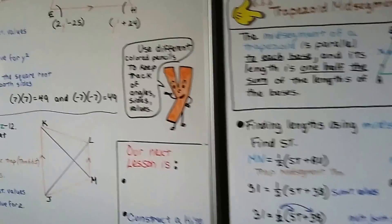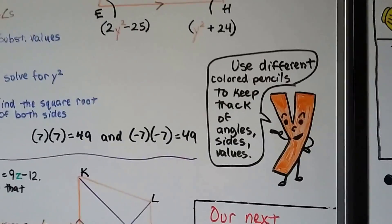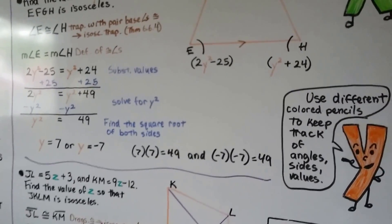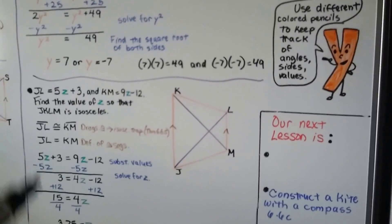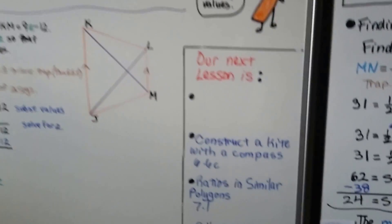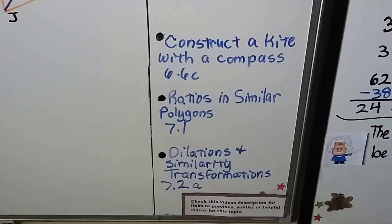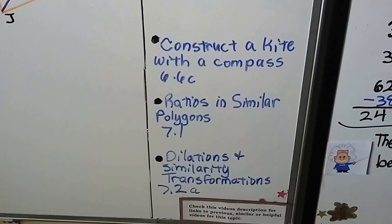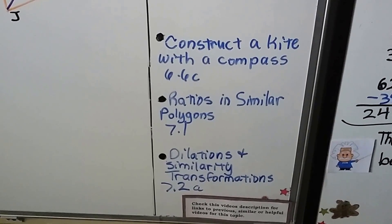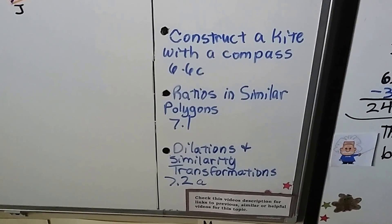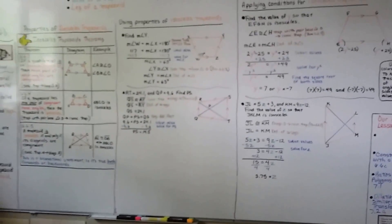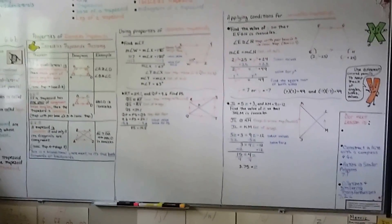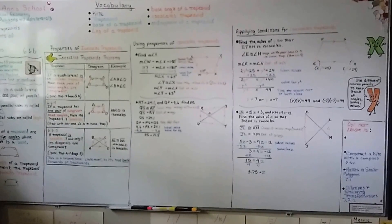Use different colored pencils to keep track of angles, side values, and lengths — color really helps your eyes see what's going on. Our next lesson will be constructing a kite with a compass, then we move on to chapter seven with ratios and similar polygons. Get your straightedge and compass ready for the next construction video. Hope you're having a great day — keep going, see you next time!